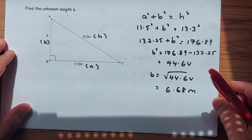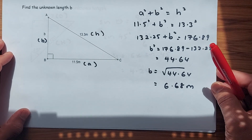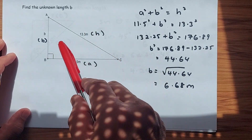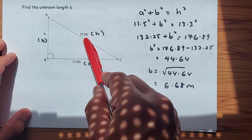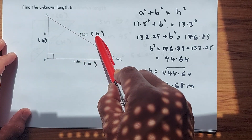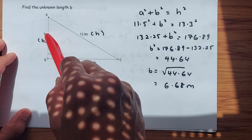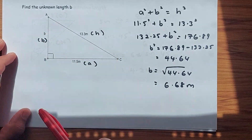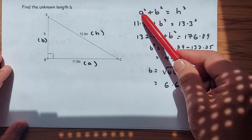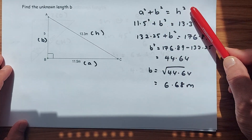The second Pythagoras theorem example: the longest side 13.3 is given opposite 90 degrees, so label it H. The two shorter sides are A and B. Since we need to find B, label that as B. The formula is A squared plus B squared equals H squared.